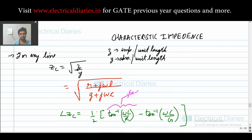So this value comes out to be between 60 to 90 degrees and this value comes out to be near to 90 degrees. So we can conclude that the angle of Zc is negative, which gives us the idea that Zc is capacitive in nature.